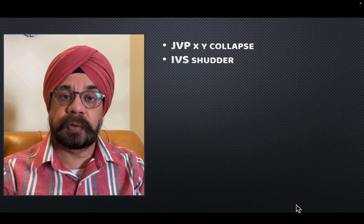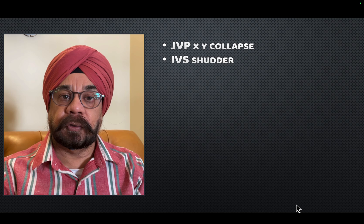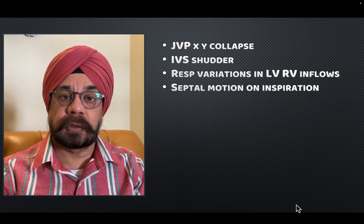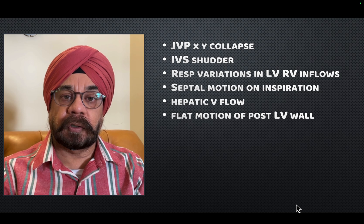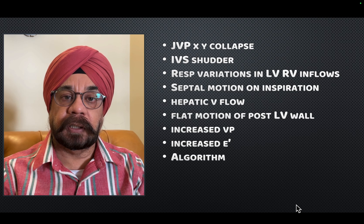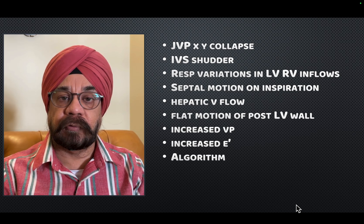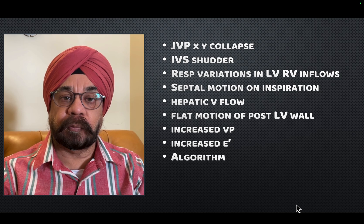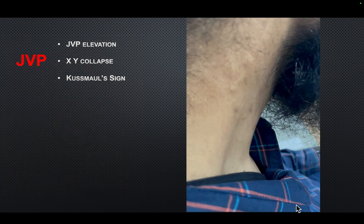In this case, I'm going to take you through clinical features of elevated JVP, show you the XY collapse in the JVP, show you the IVS shudder, show you respiratory variations in inflows, septal motion during inspiration and expiration, hepatic venous flow, flat motion of the posterior wall of the left ventricle, increased velocity propagation across the ventricle. I will also show you an algorithm — it's very important — so watch this video to the end to know how to analyze a patient with constrictive pericarditis.